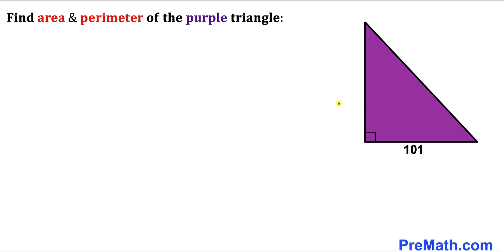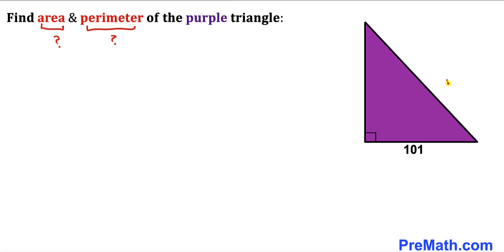Welcome to pre-math. In this video we have got a purple right triangle, as you can see in this diagram, whose only one side length has been given to us as 101 units. Our task is to calculate the area and the perimeter of this purple triangle.